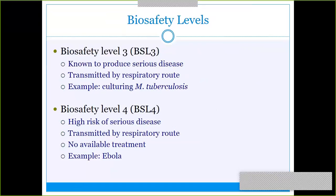Biosafety level three is for more serious conditions that can also be transmitted via the respiratory route. This is where tuberculosis comes in — because it can remain suspended in the air for so long, we need to be very careful about the biosafety level we use. Bacillus anthracis would also have to be level three, since it produces spores that can be respiratory.